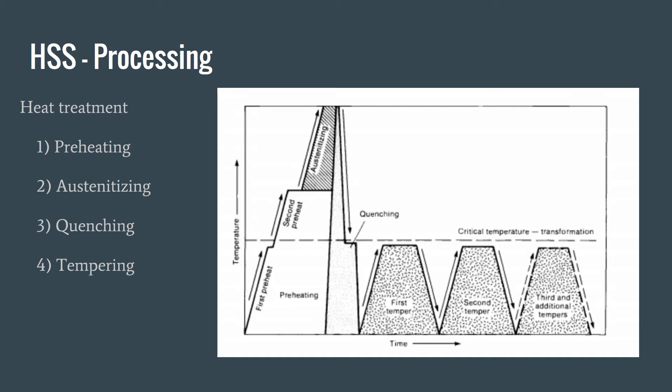The quenching converts austenite into a hard martensite structure. The martensite is very hard but very brittle, so it's then tempered several times to relieve internal stresses that could cause cracking. This makes for a steel with a hardness similar to martensite but with more ductility.